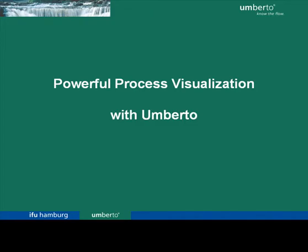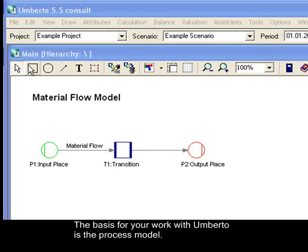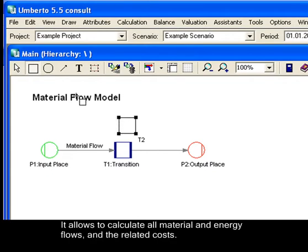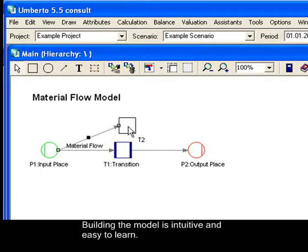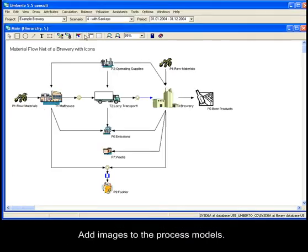The basis for your work with Umberto is the process model. It allows you to calculate all material and energy flows and the related costs. Building the model itself is intuitive and easy to learn. As shown here in this example from practice, even complex structures and processes can be modeled clearly and comprehensibly.